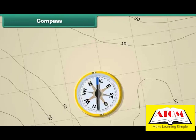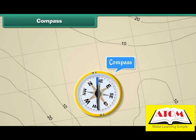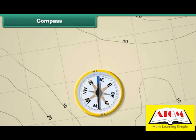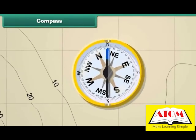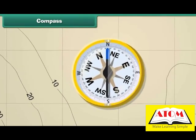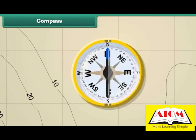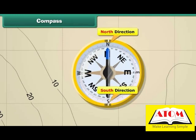This is a compass. It is a device we use to find directions. The compass has an arrow with a head and a tail. The head always points to the north, and the tail to the south.